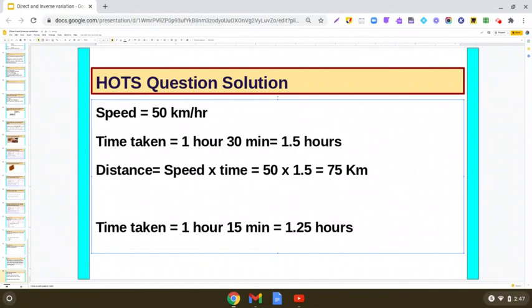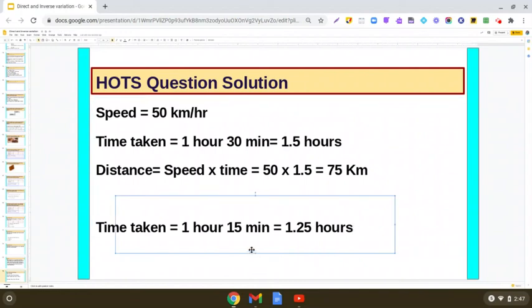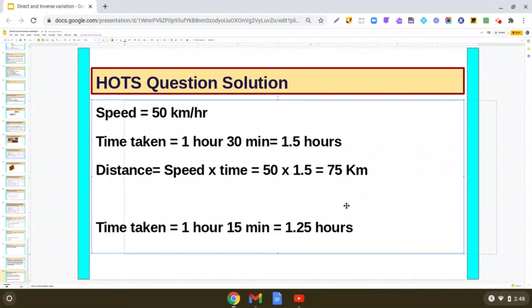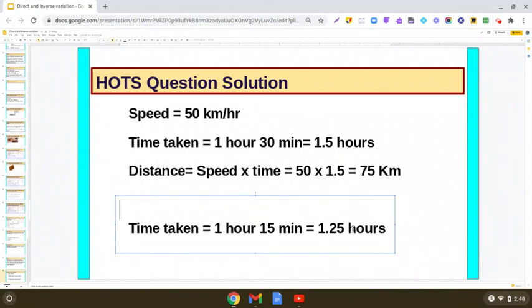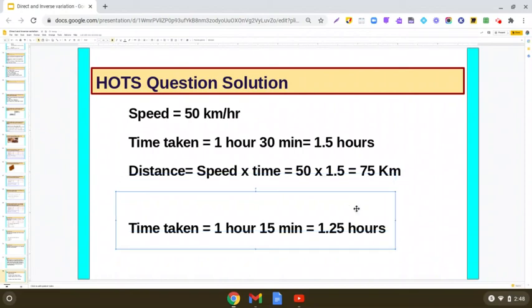So can you tell me if he has to cover the distance 75 km in 1.25 hours, what will be the speed? What is the formula of speed? Yes, how do you calculate speed? Speed is distance upon time. So we will be using that formula. Let us write it down. Speed is distance upon time.